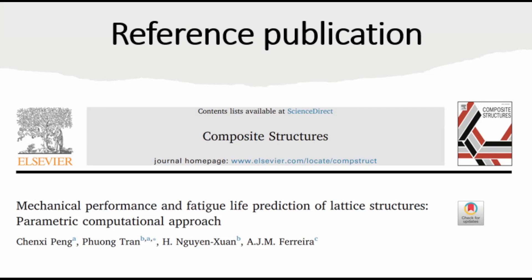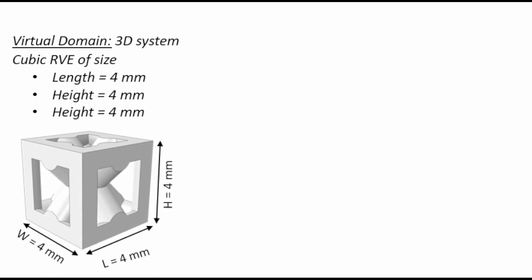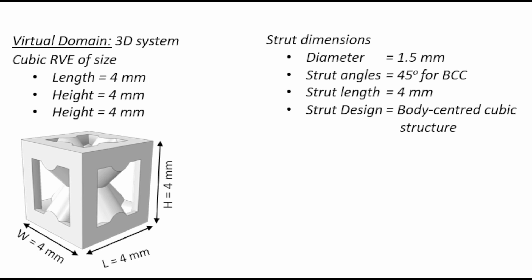The reference publication I'm going to be using as I make this video will be a paper published in composite structures. In terms of the virtual domain, our virtual domain is going to be something of the length of four by four by four — a simple cubic with also a body-centered cubic structure. If we look more closely at the struts used in this design, every strut will have a diameter of 1.5 millimeters. For the BCC structure, there will be an orientation of 45 degrees, while the simple cubic ones will be 0 and 90 degrees. The strut length within the structure will be 4 millimeters.